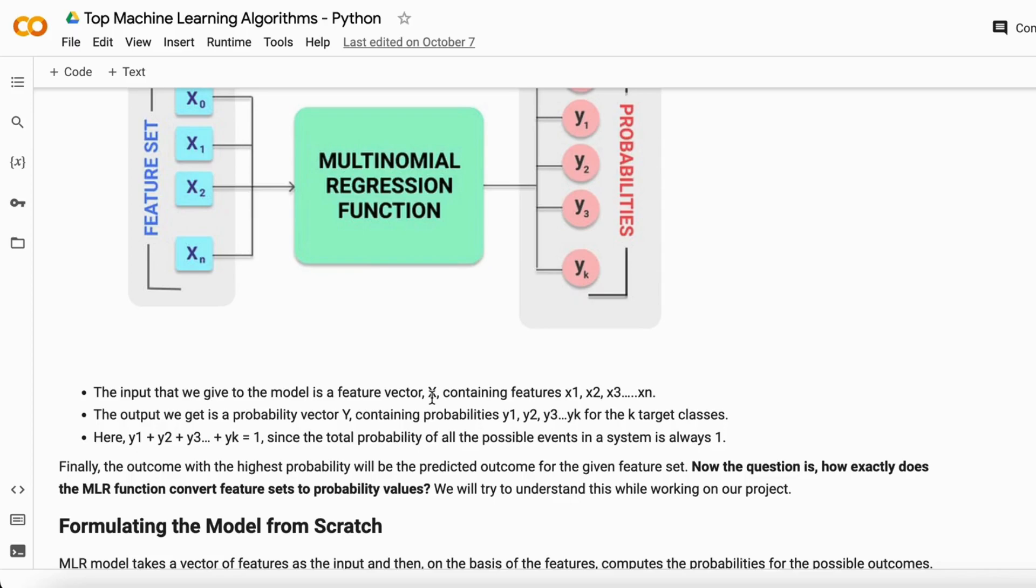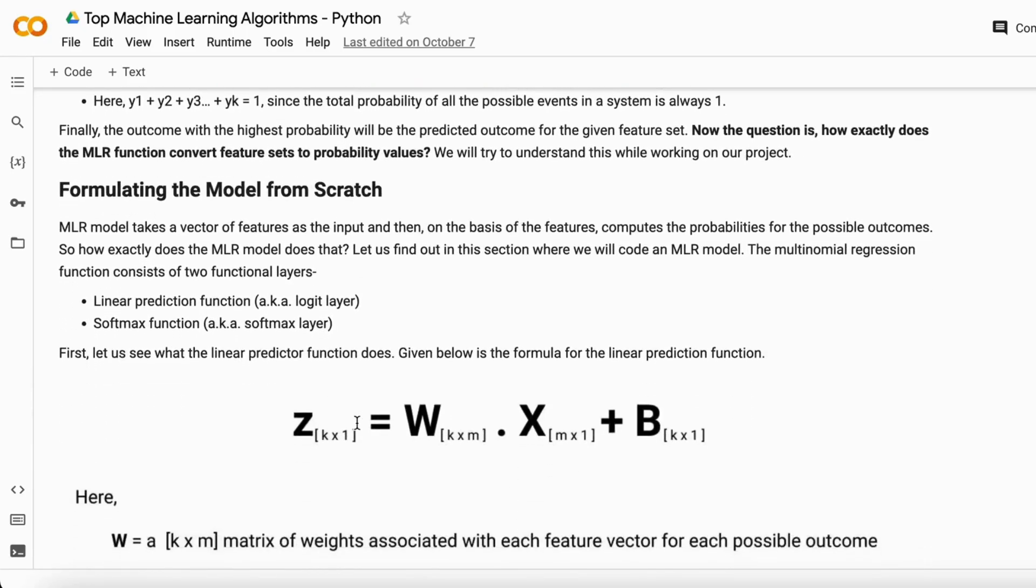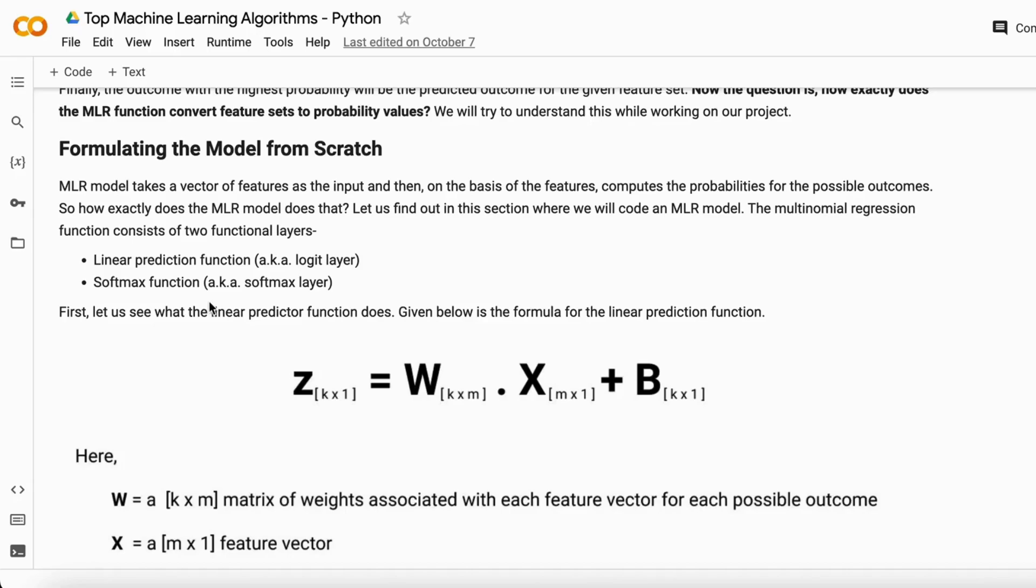How exactly does it give you so many probabilities for all the labels in your target variable? Logistic regression takes the linear prediction function and applies the sigmoid function on top of that to give a binary outcome on a decision boundary. In MLR, it has the soft max layer instead of the sigmoid layer. By applying the linear prediction function to the soft max layer, it gives you k number of probabilities for as many labels as you have.